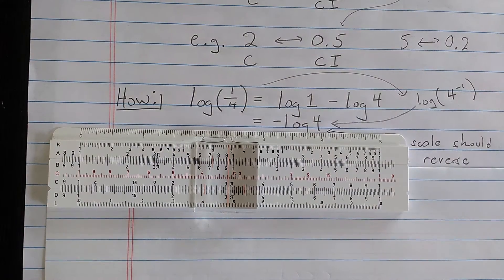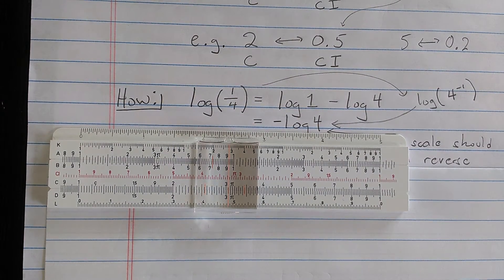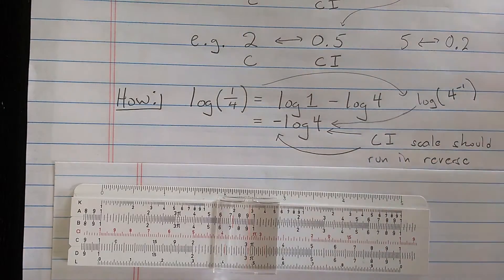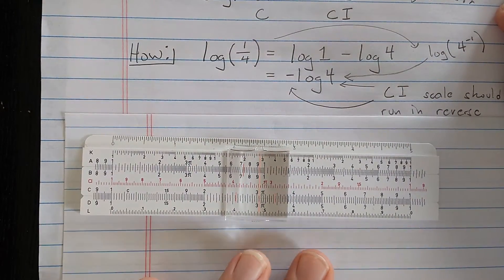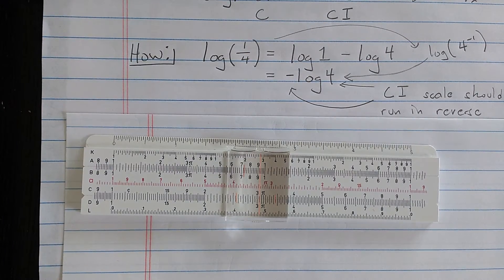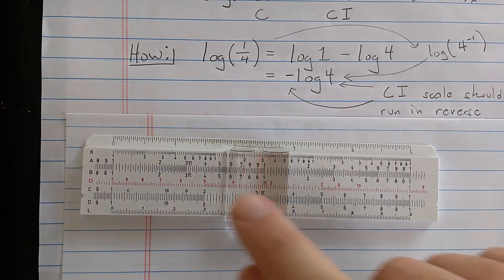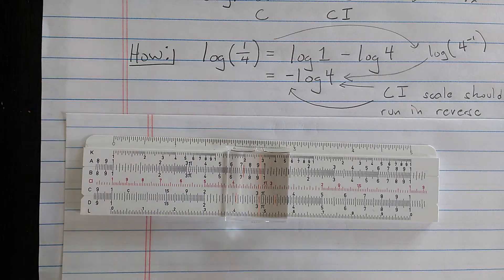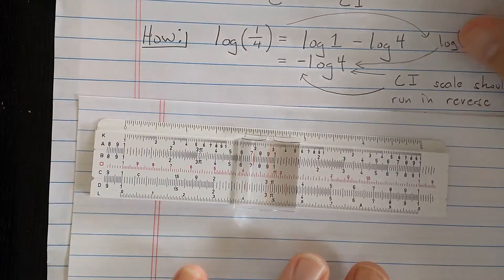On some slide rules, you will see a DI scale, which is essentially the same as the CI scale running in reverse of the D scale. Lots of times the D scale or the DI will be on the base and the C and the CI will be on the slide. But it's hard to give general rules. There's a lot of variations on slide rules.